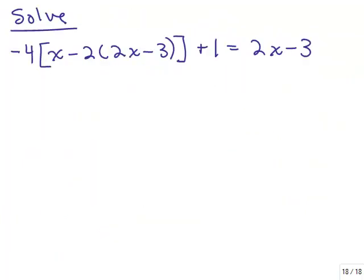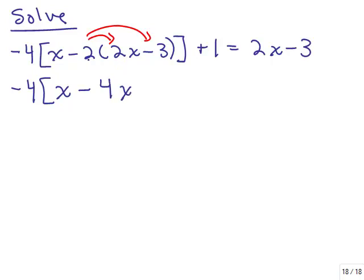I don't think I'll have time to solve and check this last big long problem, but let's at least solve it. Why don't you try it first on your own? The right-hand side is already simplified. Over on the left we have two grouping symbols — both parentheses and brackets. I need to do the innermost parentheses first, then do the distributive property with negative 2 times 2x minus 3.